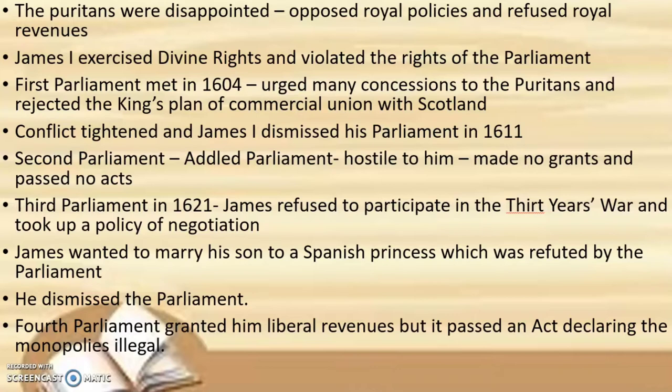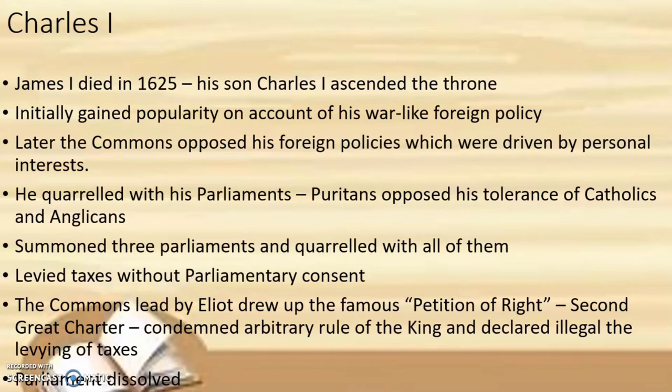The Puritans wanted King James I to participate in the Thirty Years' War, but the king was not much interested. He took up a policy of negotiation instead. James I also wanted to marry his son to a Spanish princess, which was completely rejected by parliament. He dismissed his third parliament as well, then summoned a fourth parliament which granted him liberal revenues but passed an act declaring the king's monopolies as illegal. King James I died in 1625 and his son Charles I ascended the throne.